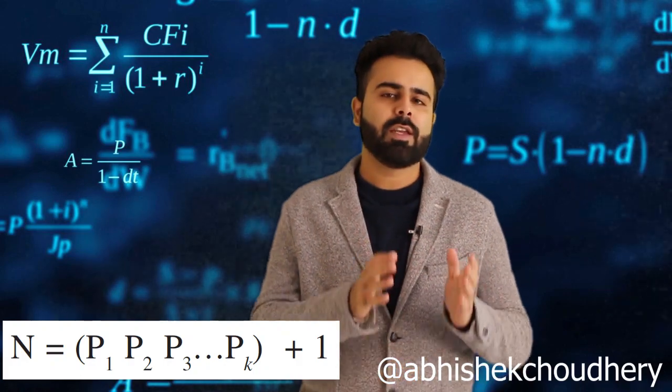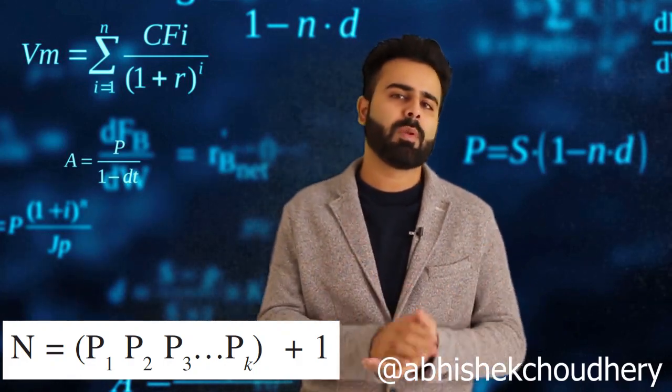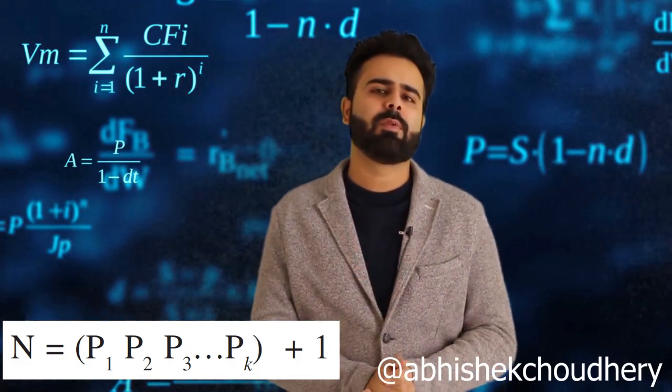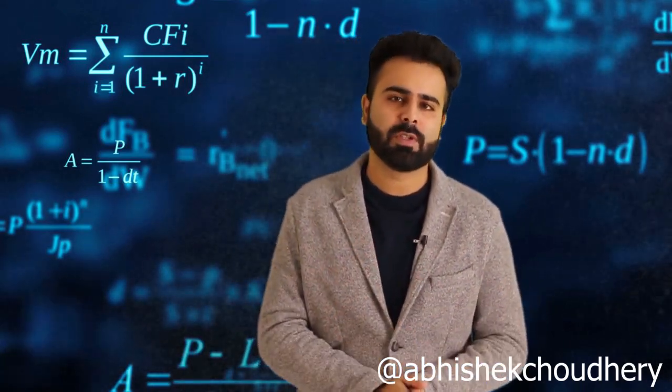In the same way P2 doesn't divide N, P3 doesn't divide N, and you will find out that there is no prime number which divides N. This means N does not have a prime divisor, and since it does not have a prime divisor, it is not even a composite number.